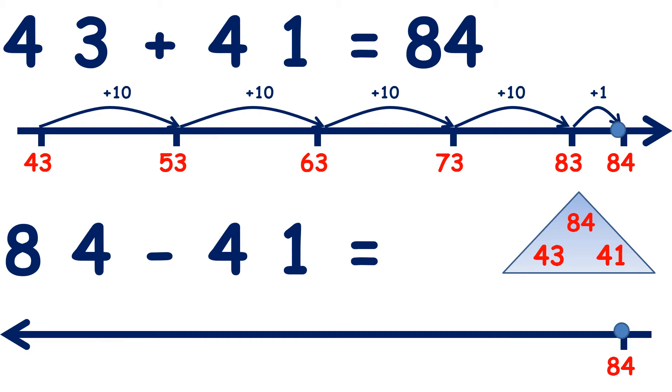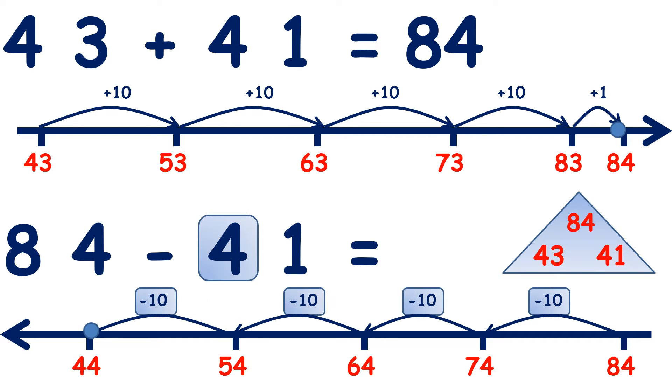We start on 84, subtract 10 we get 74, another 10 is 64, another 10 is 54, and a fourth 10 we get 44. So we've subtracted four 10s. Now let's subtract 1 unit, we get 43.